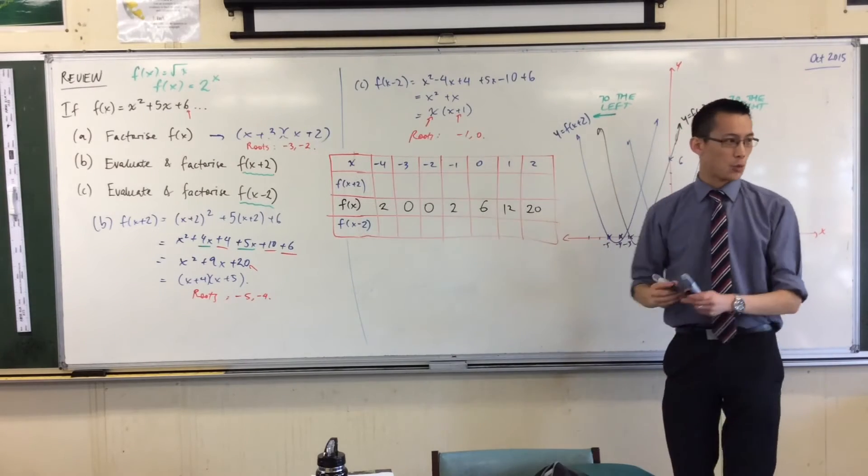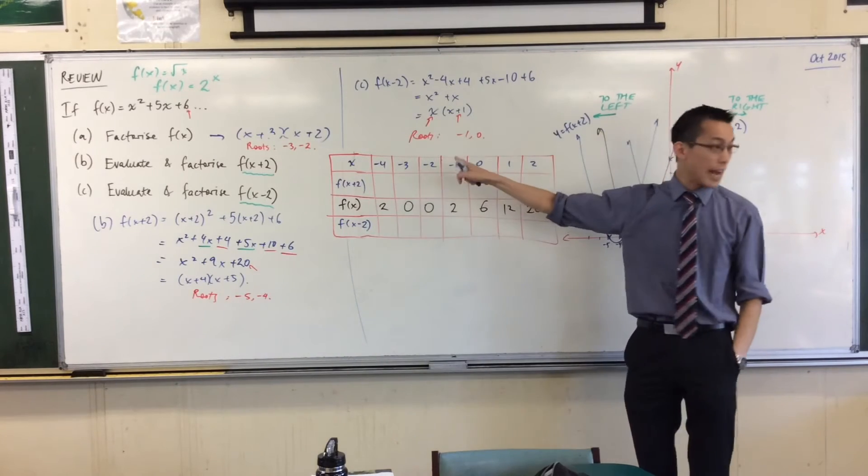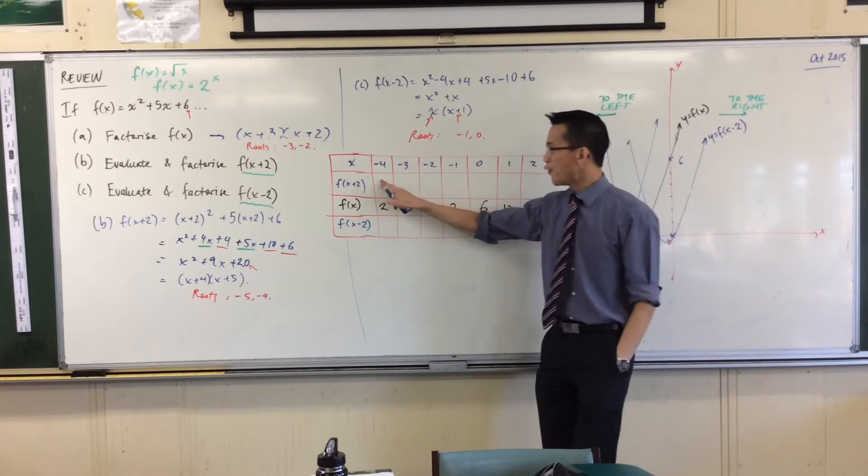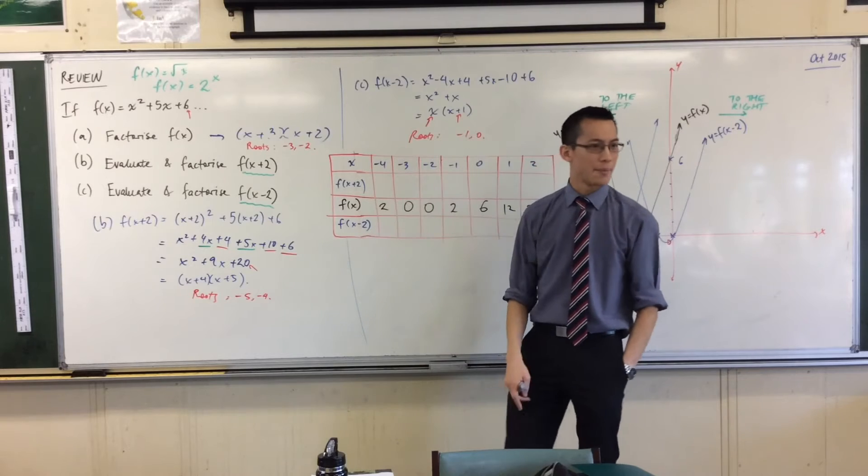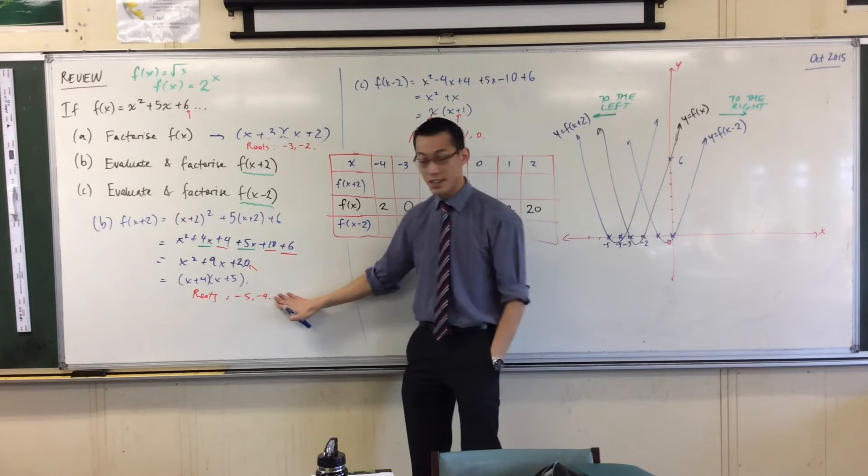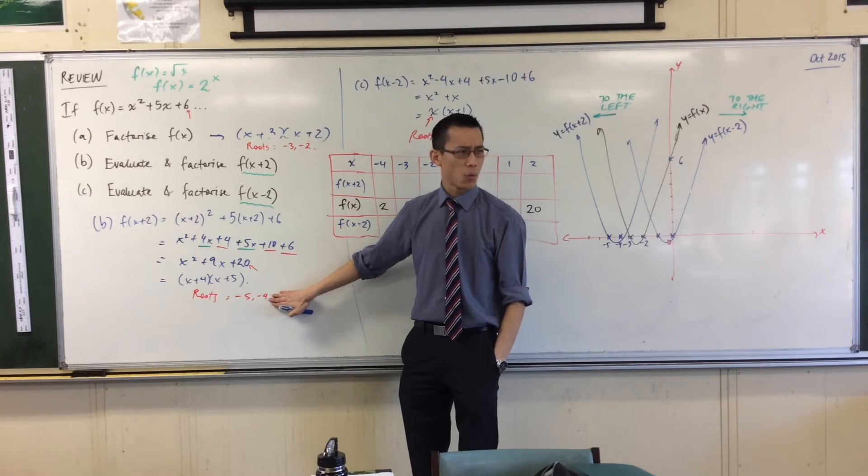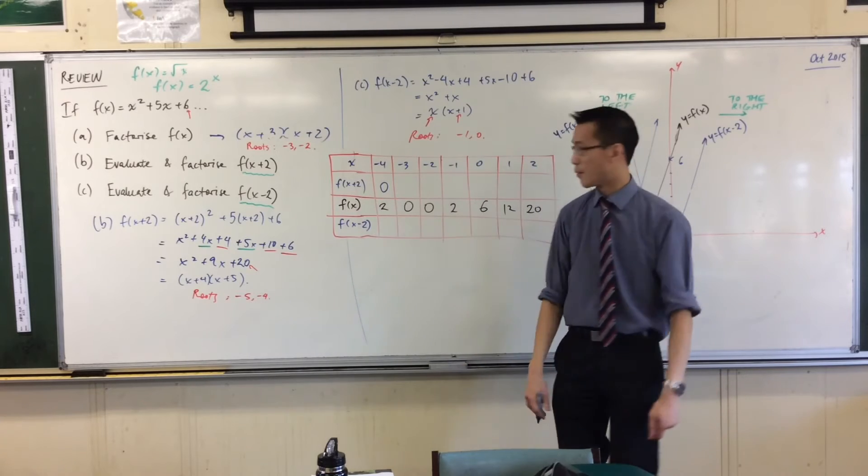Now, what about the other two? What happens when we compare them, right? Well, let's have a look at f of x plus 2 first. That's what we did earlier, right? Negative 4. When you put in x equals negative 4, you actually already know what's going to happen when you put in x equals negative 4 for this graph because it's a root, right? So what will it be equal to if it's a root? 0. You've already done that one.